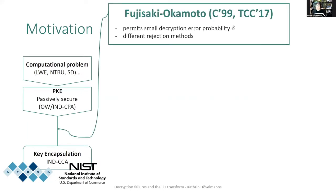This recipe is by now quite well known — it's the Fujisaki-Okamoto transformation, which was recently revisited at TCC in 2017. The revisiting was done to allow for public key encryption schemes where decryption sometimes fails, which can happen for example for lattice- or code-based schemes. The revisiting also considered different rejection methods.